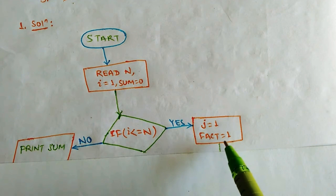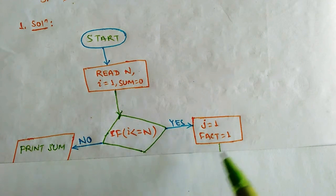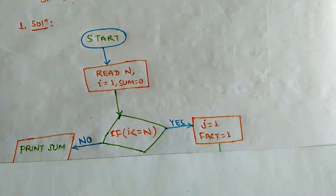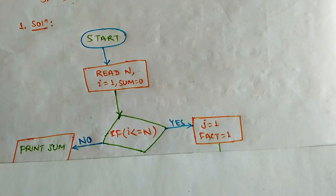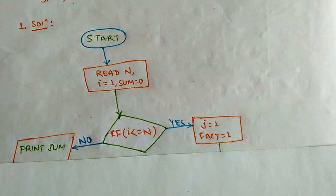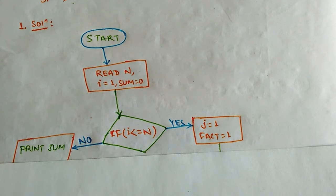One important thing to share: if you can write the flowchart, this means you can write the algorithm. When you can write the algorithm, you can easily write the code, whether in C, Python, or Java. The algorithm and logic are common across all languages.